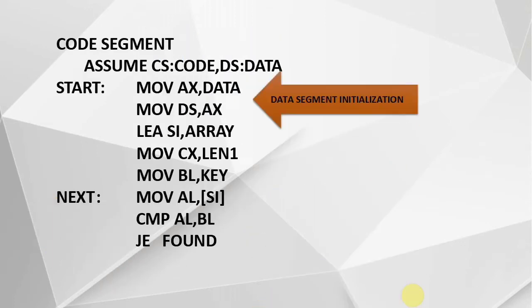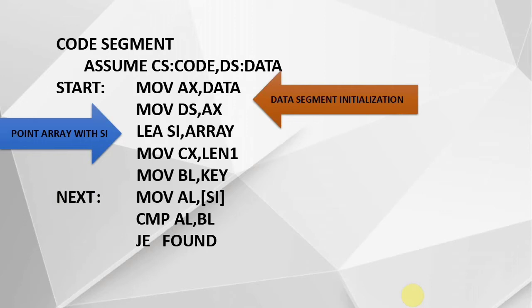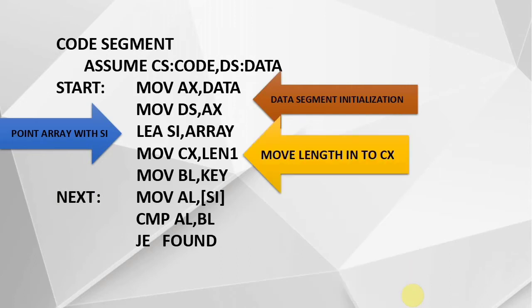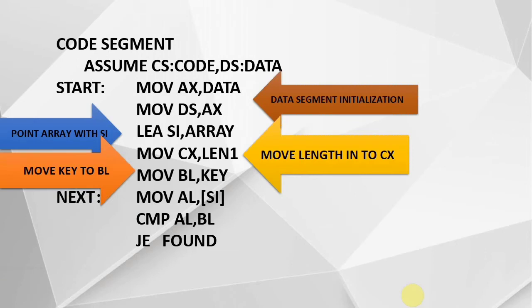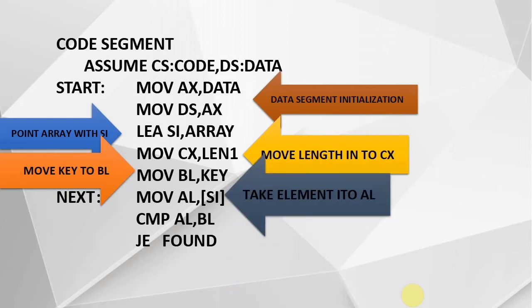In the code segment, the assume command is used, then MOV AX, data and MOV DS, AX initialize the data segment. LEA SI points the SI register to the array to access every element. The length is loaded into CX (the count register), and the key to search is loaded into BL. The instruction MOV AL, [SI] moves an element from the array into AL for comparison.